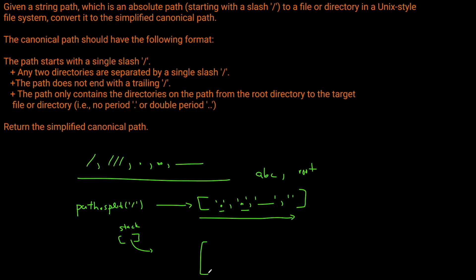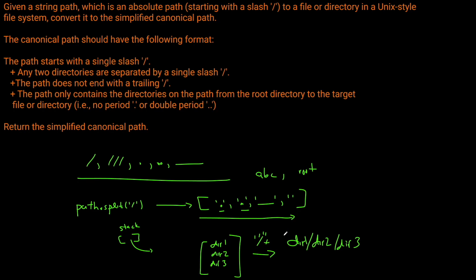At the end, our stack will be full of directory names — directory one, directory two, directory three, and so on. We just need to join these directories together with slashes, giving us dir1/dir2/dir3. We also need a leading slash, so we add that manually to the concatenated string. That's our result. This problem is really simple — once you see the code, it'll be super clear.